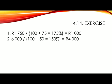Number 2, your selling price is 6,000 divided by 150%, which is made up of the 100 for the cost and 50% for the markup. 6,000 divided by 150%, or divided by 1.5, gives you an answer of 4,000 Rand.